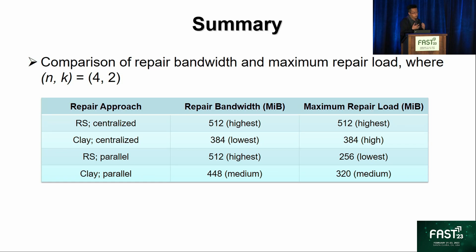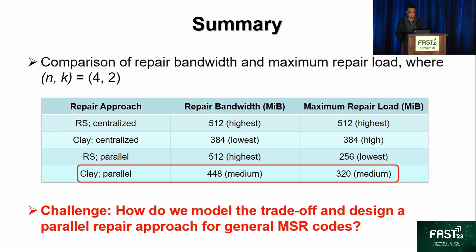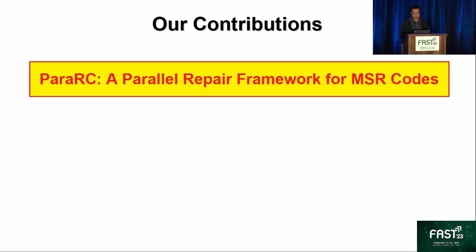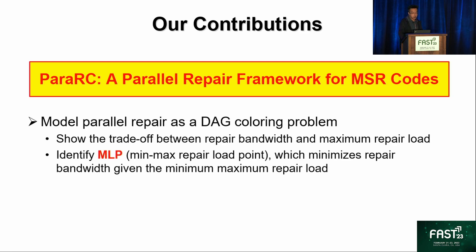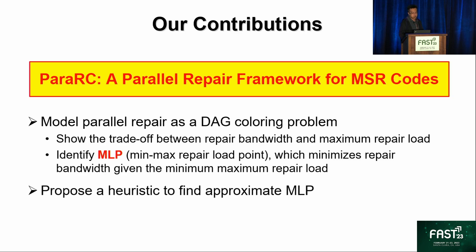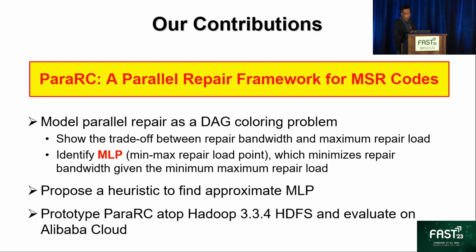The question is how to systematically find solutions for general parallel repair of MSR codes — how do we model the trade-off and design a parallel repair approach for general MSR codes? Our contributions include: proposing Parallel RC, a parallel repair framework for MSR codes; modeling the parallel repair problem as a bin-covering problem to show the trade-off between repair bandwidth and maximum repair load; identifying a point called MLP (Minimum-Load Point) that minimizes repair bandwidth given the minimum maximum repair load; proposing a heuristic to find the approximate MLP efficiently; and prototyping Parallel RC on Hadoop HDFS and evaluating it on Alibaba Cloud.